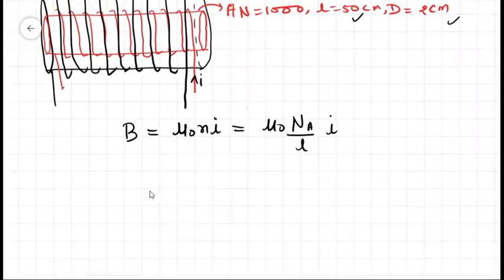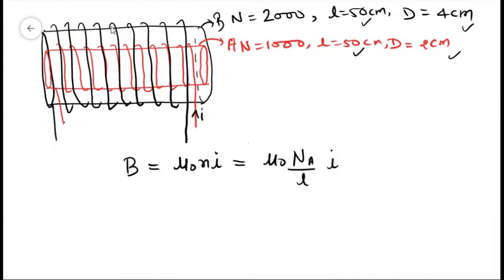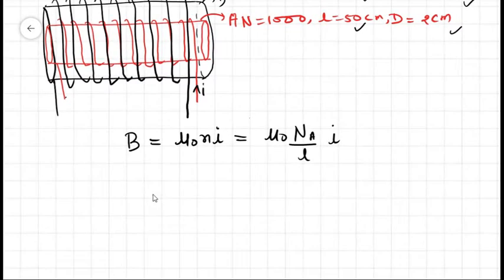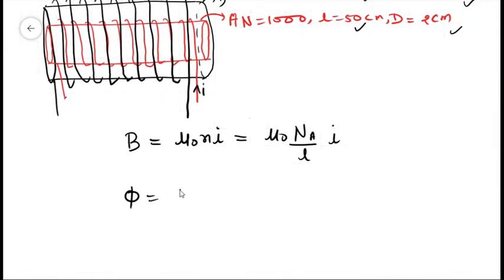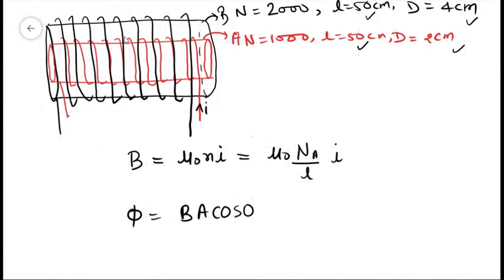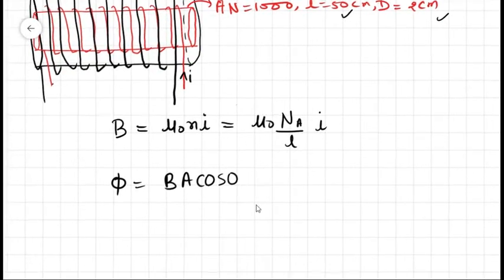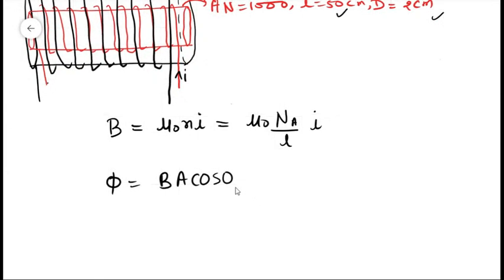Now what is the flux passing through a coil of loop B? So that will be Φ equals BA cos θ. And θ is 0 because B and A both are in the same direction.